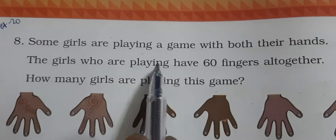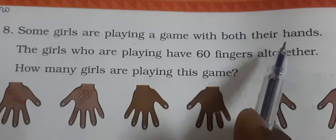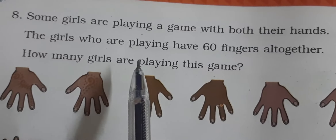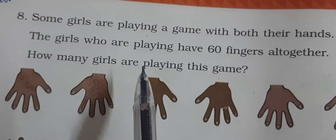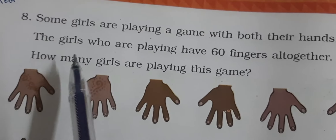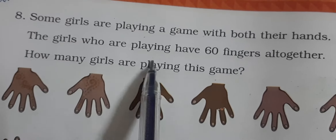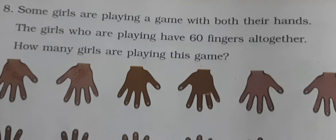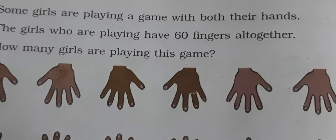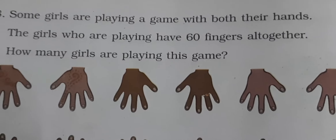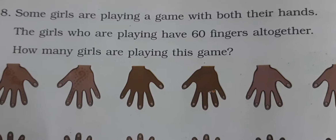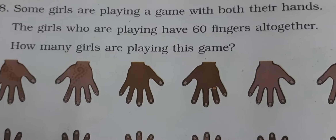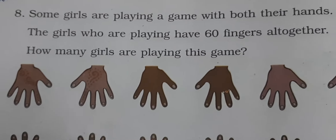Some girls are playing a game with both their hands. Kuch larkiyan hain jo apne dono haatho se kuch game khel rahi hain. The girls who are playing have sixty fingers altogether. Jo bhi larkiyan game khel rahi hain, un sab ki fingers mila ke total sixty hoti hain. Total girls equal to sixty fingers.